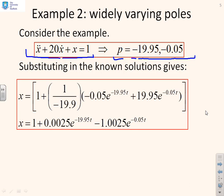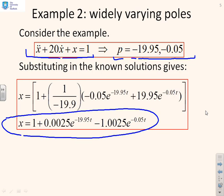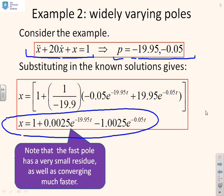Substituting into my known solution, and I've missed the steps because you can do that in your own time, this is what you get. You get x(t) = 1 + 0.0025e^(-19.95t) - 1.0025e^(-0.05t). So again, what do you notice?